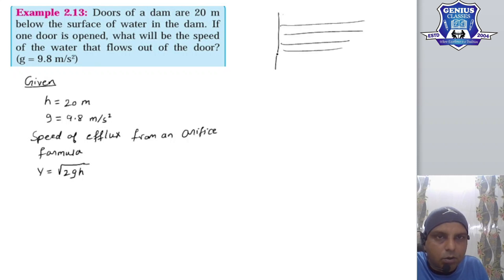The door is below the surface of water. When the dam door is closed, the water is held back. When one door is opened, water will flow out from here. So, how much speed will the water flow?